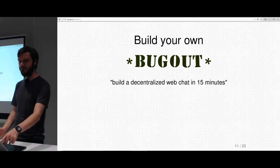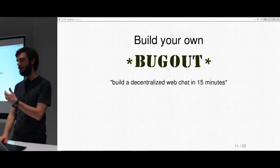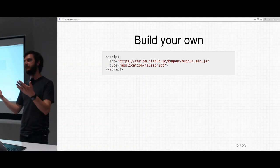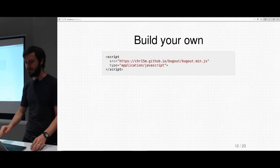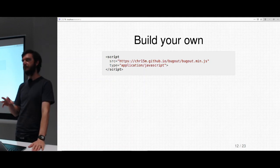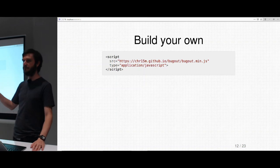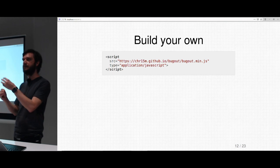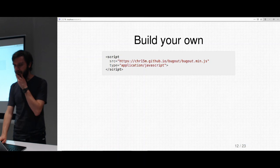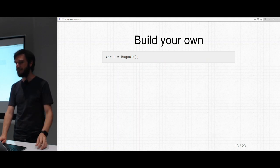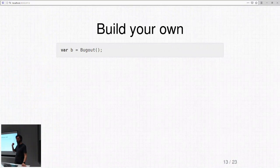If you search for 'build a decentralized chat in 15 minutes' you can find an article I wrote which is basically what I'm about to show you now. You start with a basic index.html file and load the library. Once you have the library loaded, you open a new script tag and create a Bugout instance like this: `b = new Bugout()`. Every instance created in every browser has its own ID, and you can get that by doing `b.address` — a Base58 encoded string starting with the letter B.